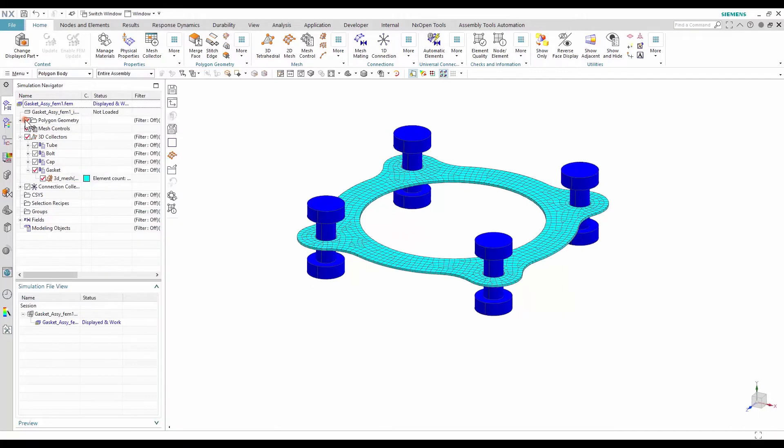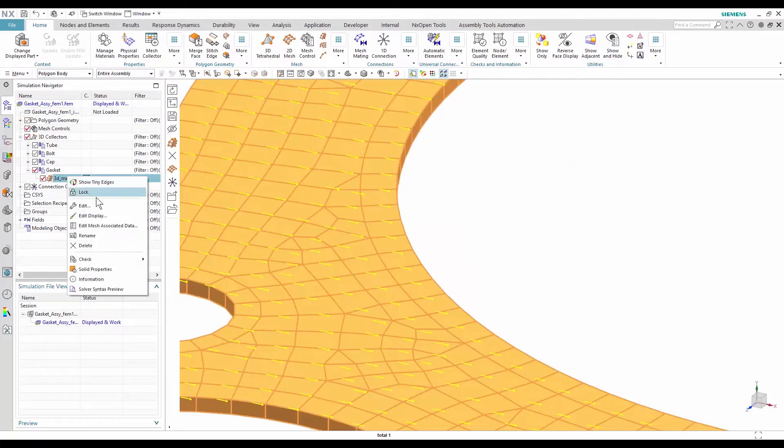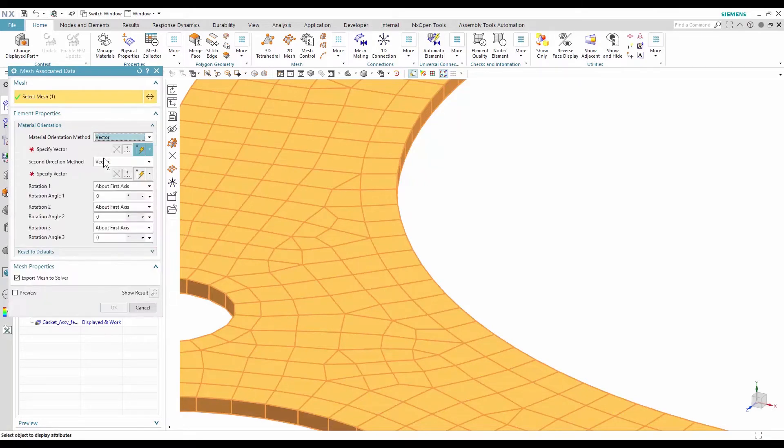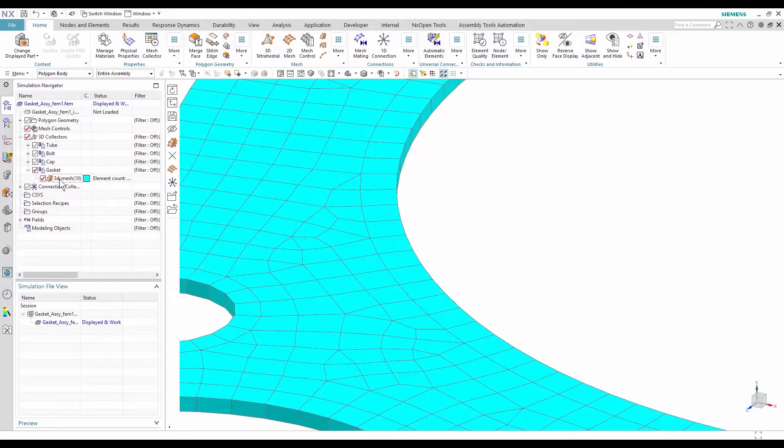Now that the material is defined, I must also specify the material orientation. The solver requires the direction 1 or x of the material to be in the gasket thickness direction. To do so, I edit the mesh associated data of my swept mesh and I select the y vector as the first direction of the material.